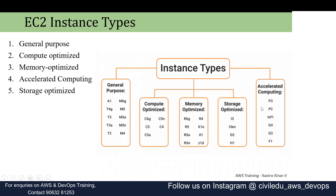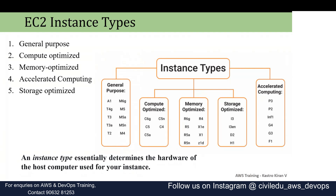For each instance type, there are specific classes. General Purpose instances include A1, T4G, T3, and others. Compute Optimized instances always start with C. Memory Optimized starts with R, X, or Z. Storage Optimized starts with I, D, or H. Accelerated Computing starts with P, G, F, or Inf. Based on your requirement, you can select the appropriate instance type.